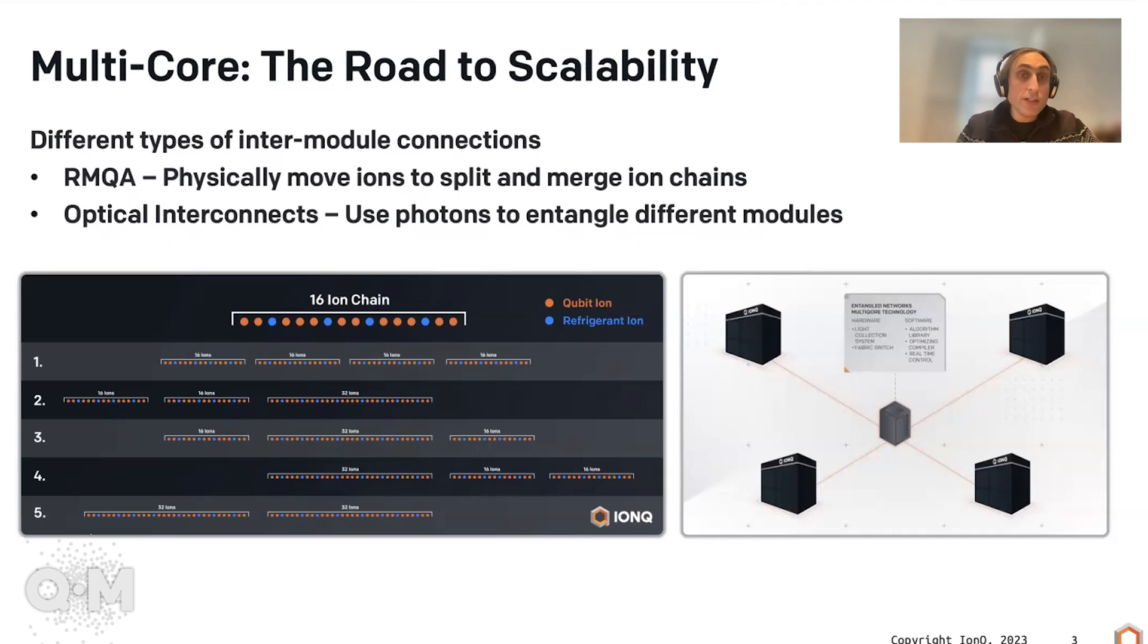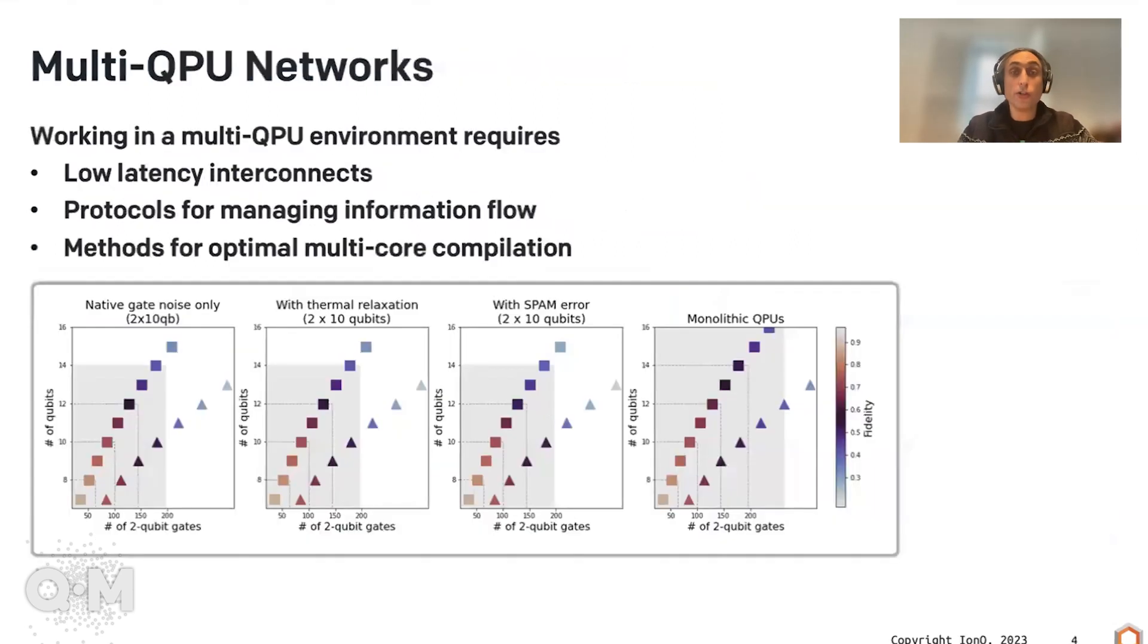What do we need in order to get a complete network going? We need low latency interconnects to collect light from the ions and basically entangle the quantum computers with each other. We need protocols to manage how the information flows in the system. And those protocols are very different from the protocols you would have on an internet kind of network because now you need things to work extremely fast and you need the entire machine to work as one computer.